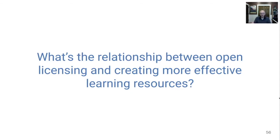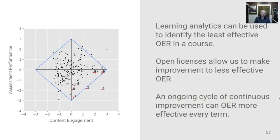What's the relationship between open licensing and creating more effective learning resources? Learning analytics — something like RISE analysis — can be used to identify the least effective OER in a course. Once you've identified OER that aren't supporting student learning effectively, the 5R permissions that open licenses grant make it possible to improve those OER. This ongoing iterative cycle of continuous improvement — collect data, identify which OER aren't working well, improve them, put them back in the course the next term — can make OER more effective every term that you teach with them.